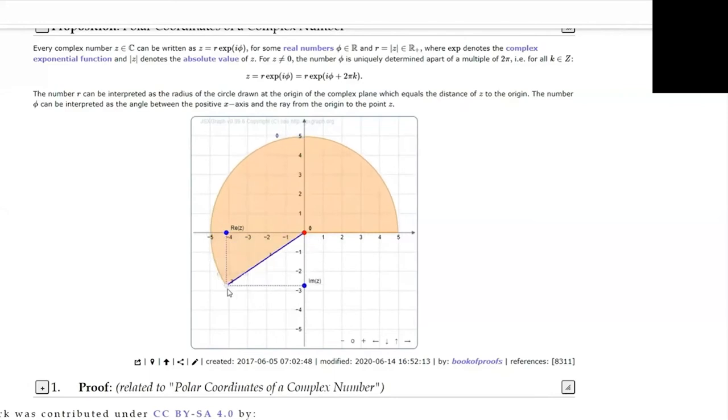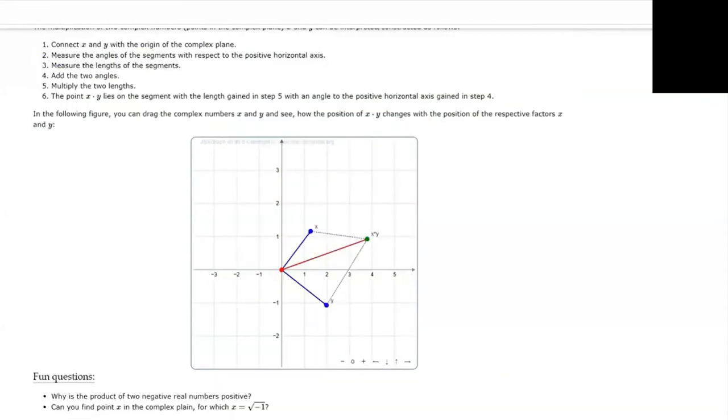In this example widget, JSXGraph helps students to better understand the difference between the Cartesian and the polar coordinates. Now going back to multiplication, when multiplying two complex numbers, we simply have to multiply the lengths of their absolute values and to add the angles of their arguments.